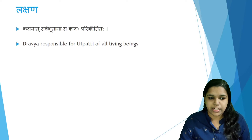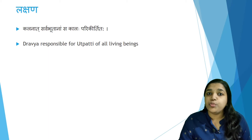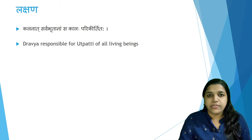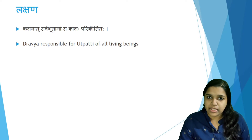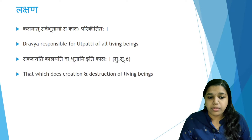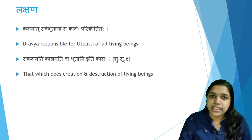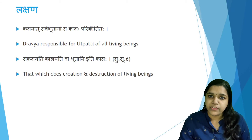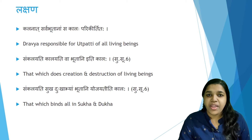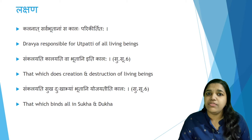The Lakshana of Kala: Kalanad Sarvabhudanam Sakalaha Parikirtitaha. The Dravya which is responsible for the Utpati of all living beings is considered to be Kala — that is Sarvabhudanam Kalanad; the Utpati of all things is considered to be the responsibility of Kala. That which does the creation and destruction of living beings is considered to be Kala — Sankalayati and Kalayati — both creation and destruction of living beings are because of this Kala. And that factor which is responsible for binding living beings to either Sukha or Dukha is considered to be Kala.